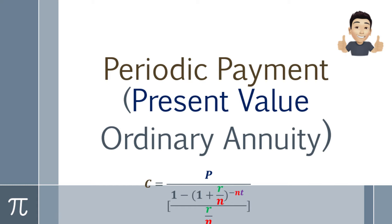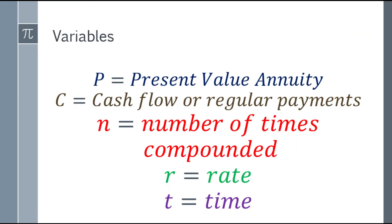Welcome back to my channel MatinLanguage and we're going to tackle periodic payment, present value, ordinary annuity. So let's start with the variables. We have P for the present value annuity, C for the cash flow or regular payments, N for the number of times compounded or compounding frequency, R is the rate and T is for the time.